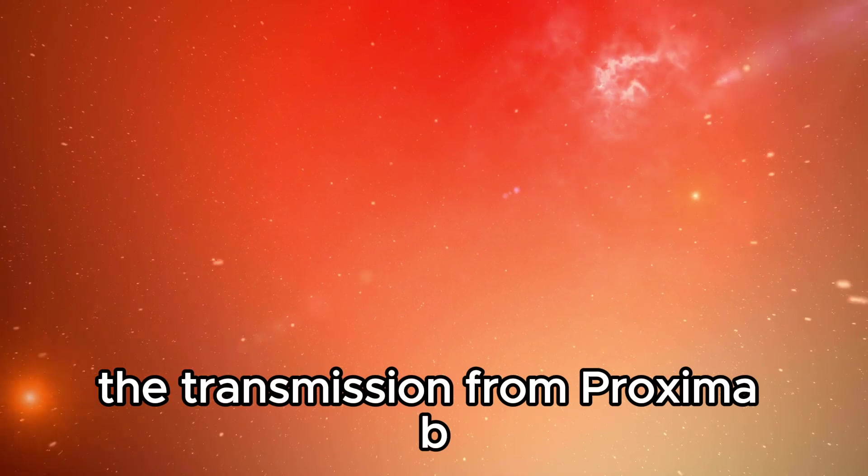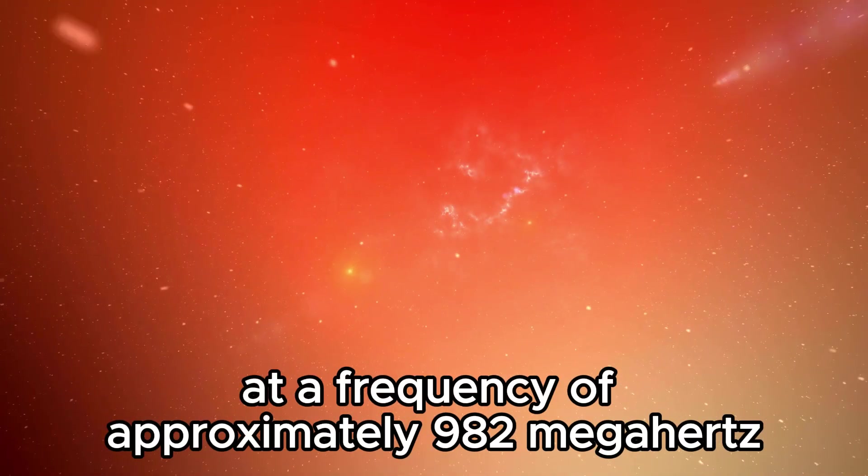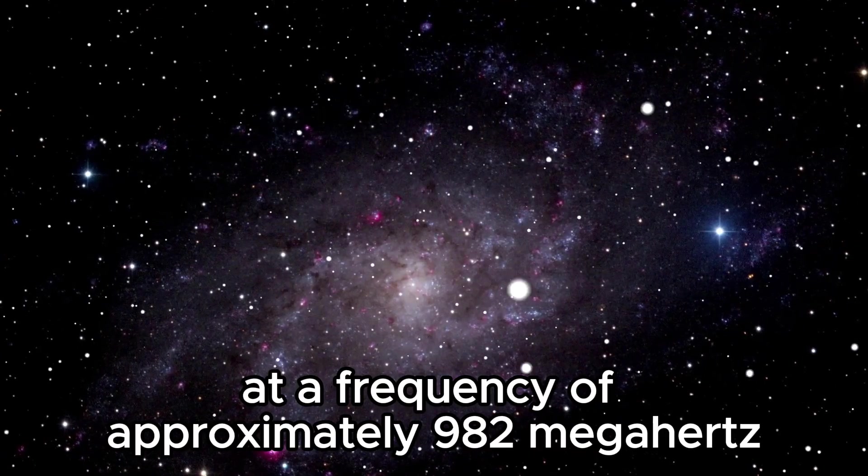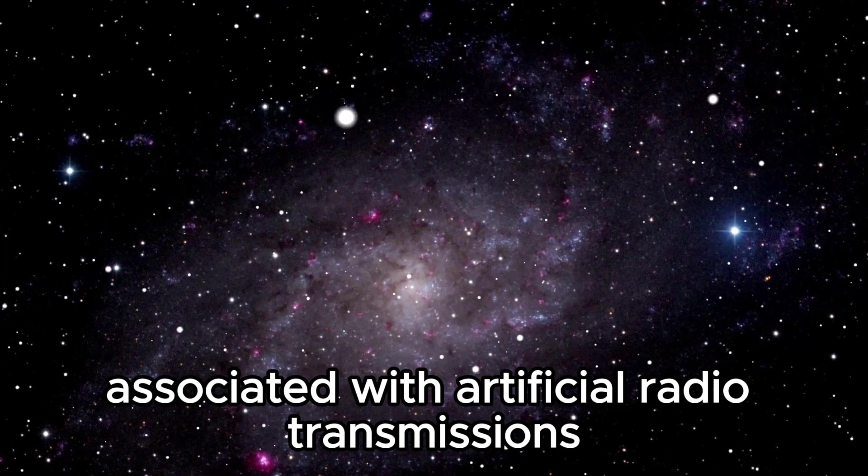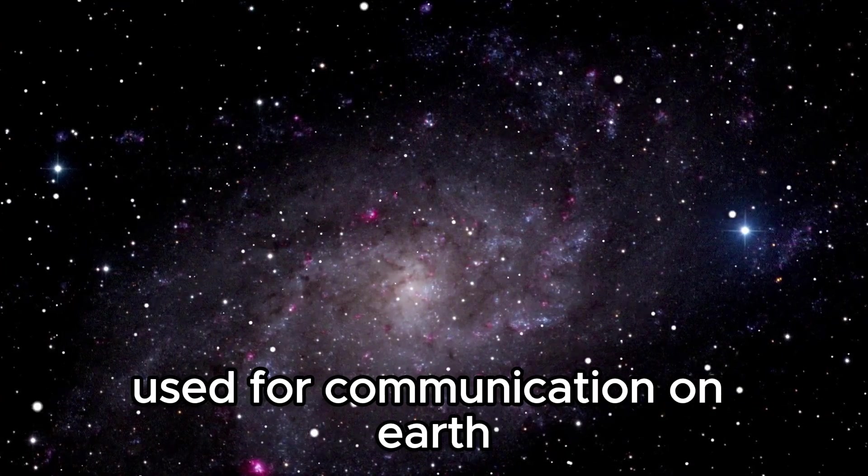The transmission from Proxima b was detected at a frequency of approximately 982 MHz, a range typically associated with artificial radio transmissions used for communication on Earth.